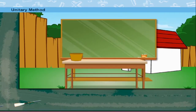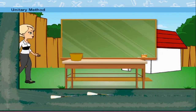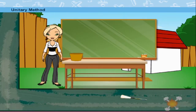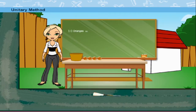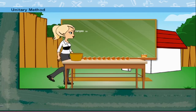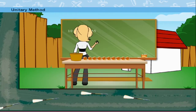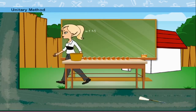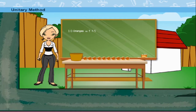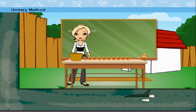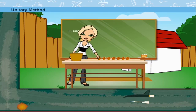Unitary Method. Teacher Rosie is in her backyard with oranges on her table. 10 oranges cost Rs. 45. Rosie ma'am wants to know the cost of 4 oranges that she has picked.